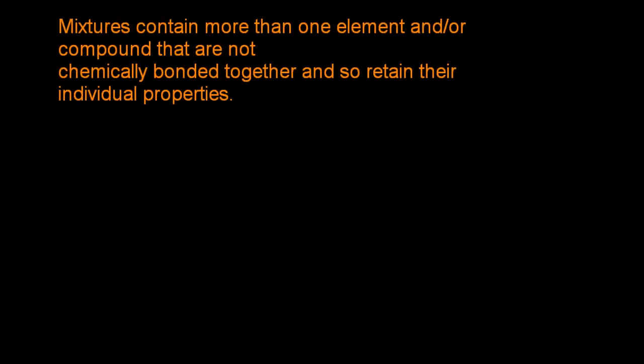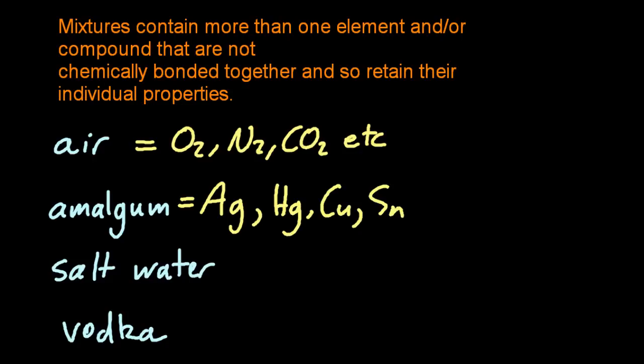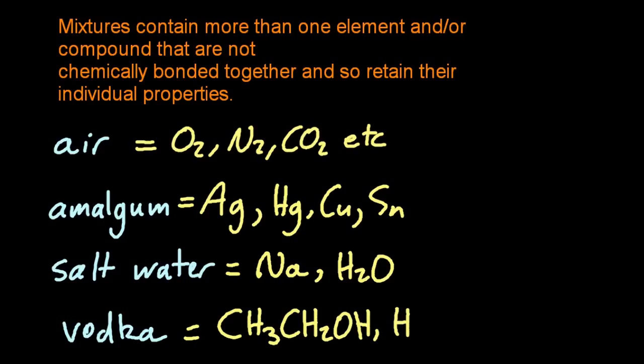Mixtures contain more than one element and/or compound and are not chemically bonded together, so they retain their individual properties. That's the IB definition. There are four mixtures: air is oxygen, nitrogen, carbon dioxide; amalgam is the fillings in your teeth with silver, mercury, copper, and tin; salt water; and vodka is ethanol and water.